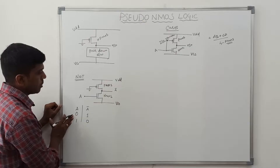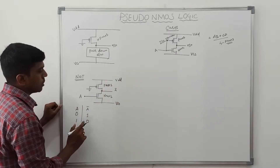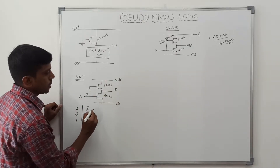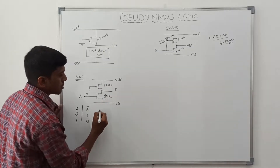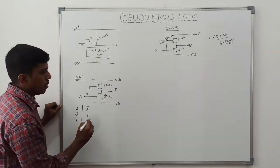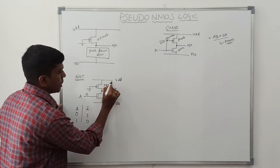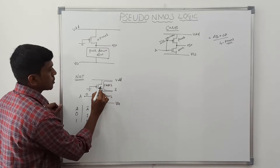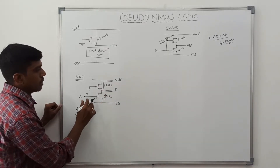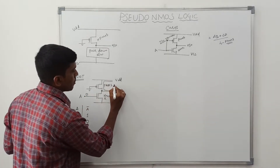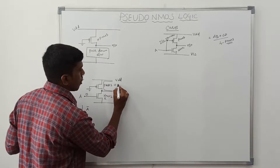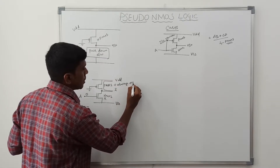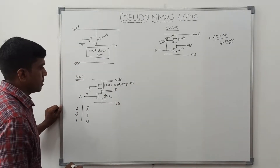Applying input A equals 0: in this case, the NMOS transistor turns off. VDD connects to the output through the PMOS transistor. This PMOS transistor is always on — it stays in the always-on state because its gate is permanently grounded.